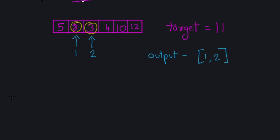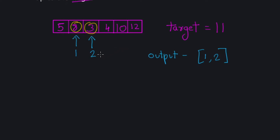A few things to remember: the indices always have to be two different indices. So if your target value is 10, you cannot just pick two 5s — you have to have two distinct indices in your array, so [0, 0] is invalid. Also, it's always the case that there's only one solution in the entire array. There cannot be two solutions, so you don't have to worry about that.